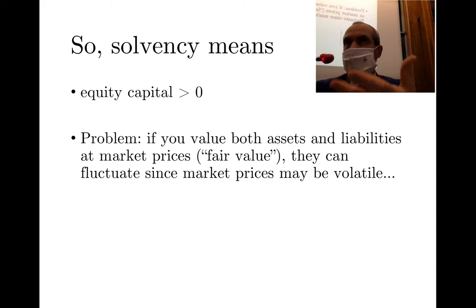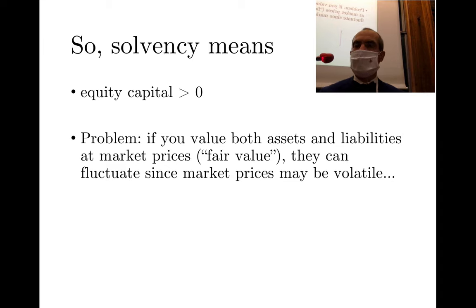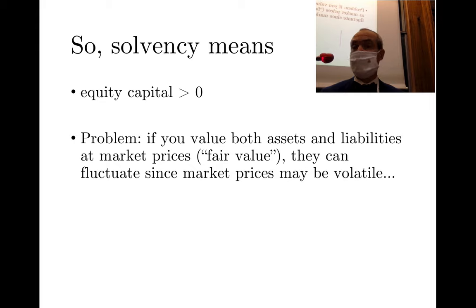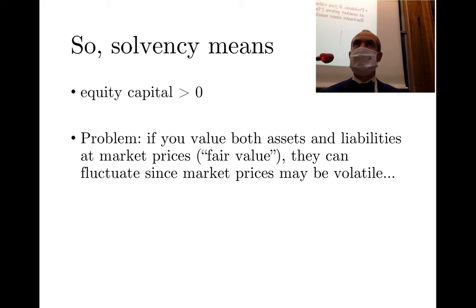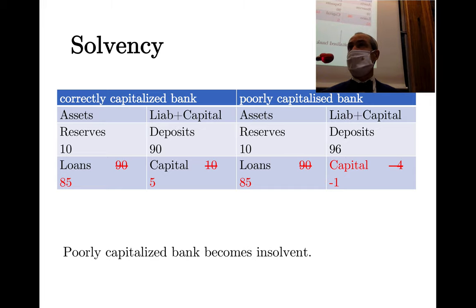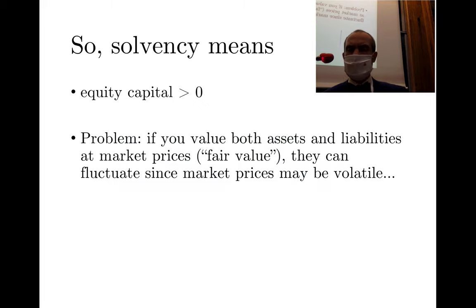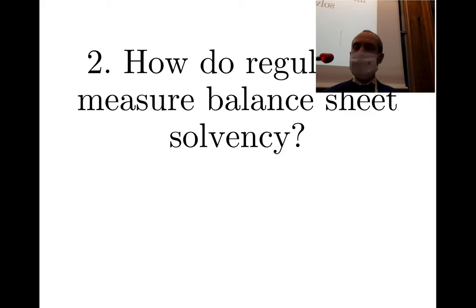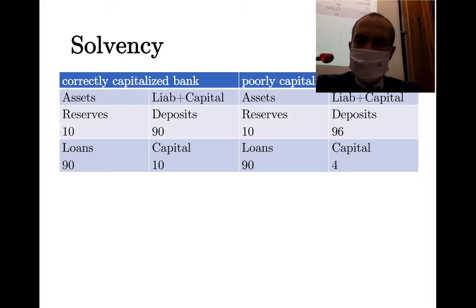In the real world, when assets and liabilities are valued at fair market value, volatility is introduced on both sides. Since equity capital is the difference between both, it is far more volatile. While the abstract concept of solvency is clear — capital becomes negative means insolvency — in practice, how do regulators measure the solvency of a given bank?